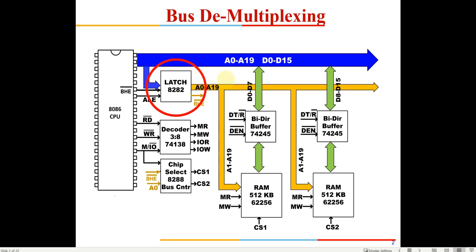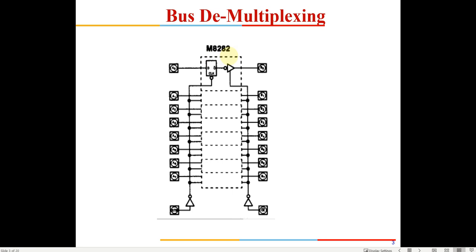We need to demultiplex it — separate the address lines, capture the address placed out here, and make the bus free for data transfer. We used a latch triggered by the Address Latch Enable signal coming from the 8086. In the block diagram, the IC number of the latch shown was 8282. Once the Address Latch Enable signal comes, these 20 address lines and the BHE signal are latched and preserved.